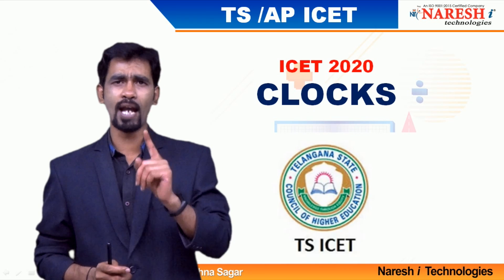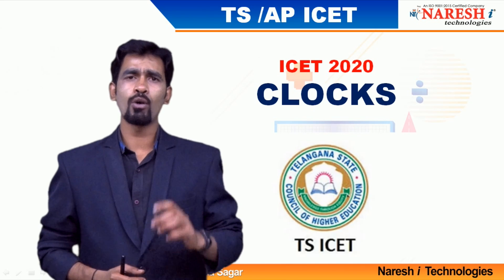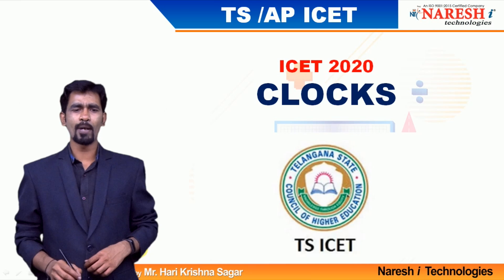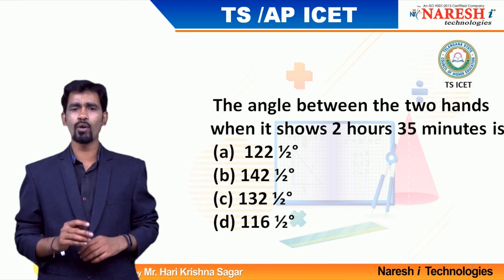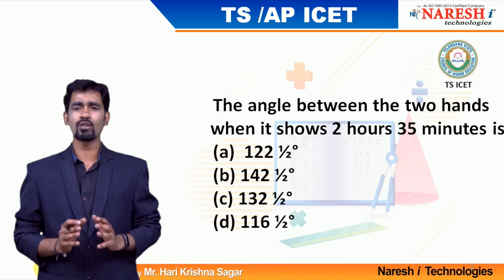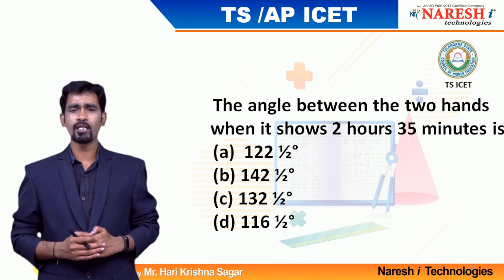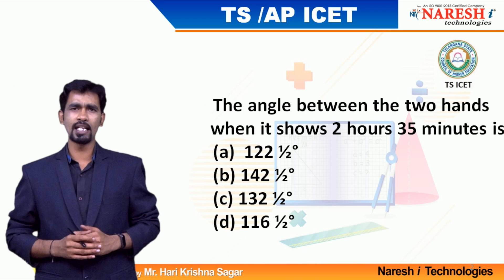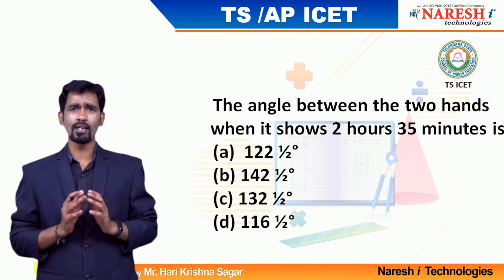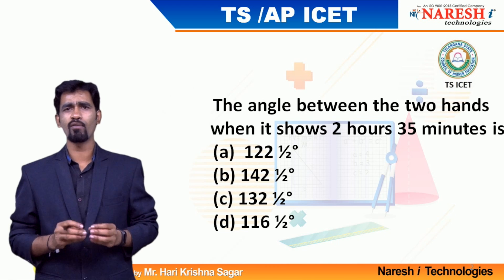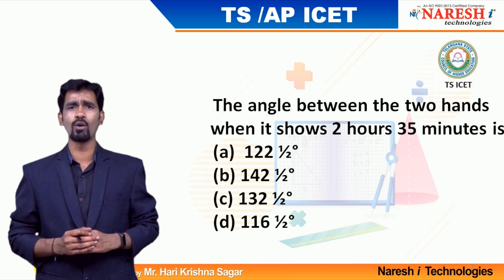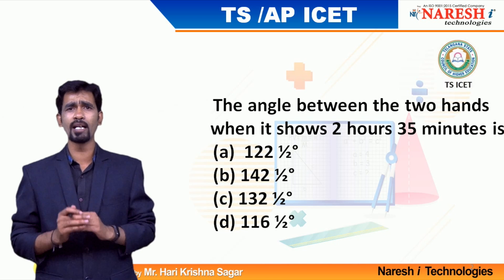Just remember one formula to tackle questions based on clocks. In the clocks problem, you are going to see a question like this: 'The angle between the two hands when it is 2 hours 35 minutes is?' That means if it is 2 o'clock 35 minutes, what is the angle between the minutes and hour hand? Whatever the time they give — 12:30, 5:10, 5:15 — any particular time is given and they expect you to find the angle between the minutes and hour hand.